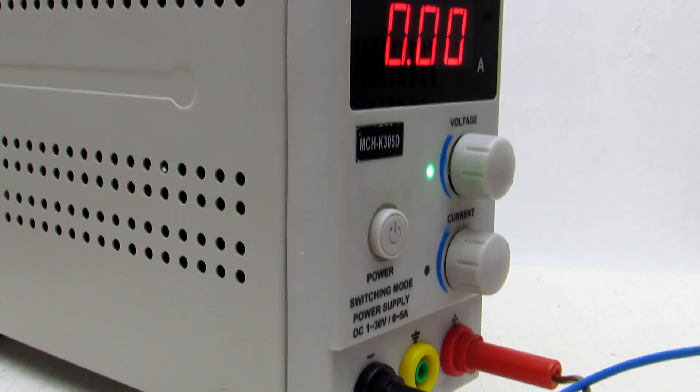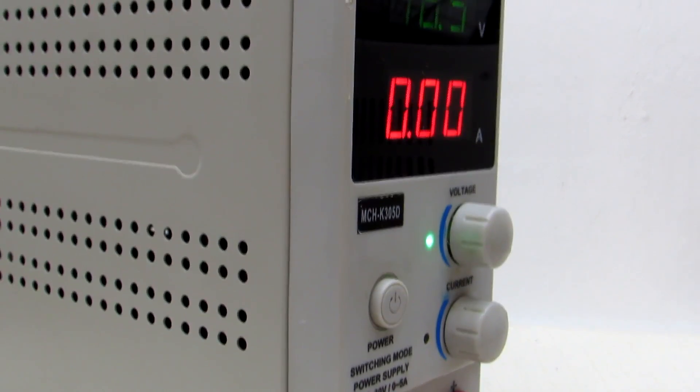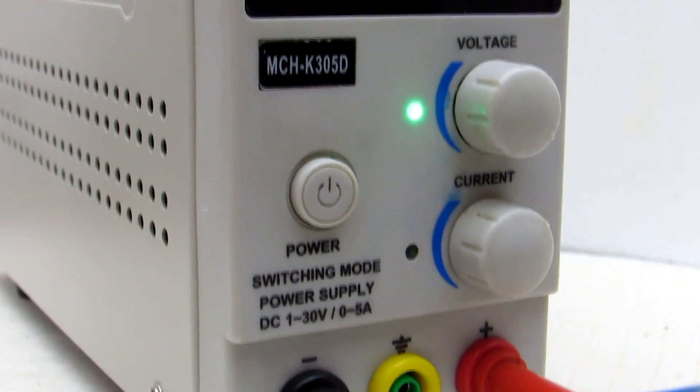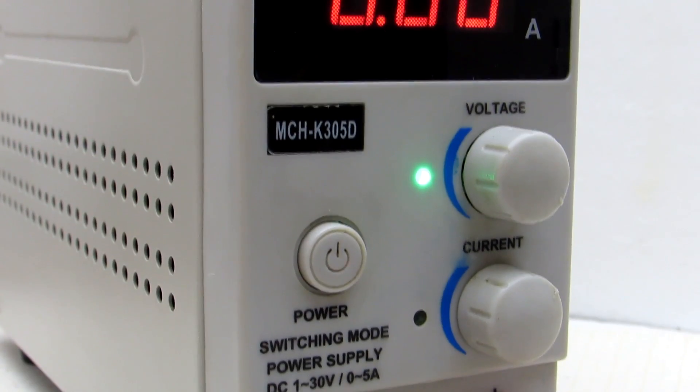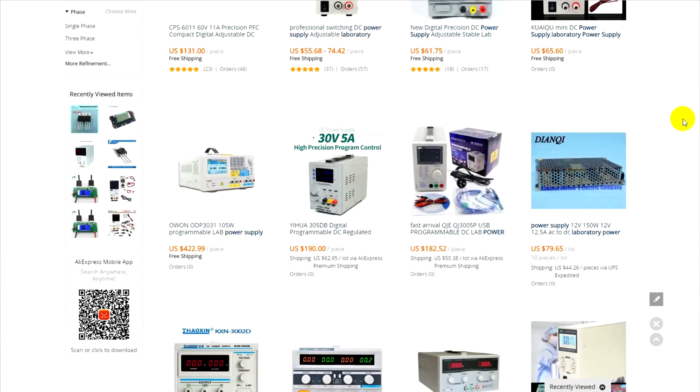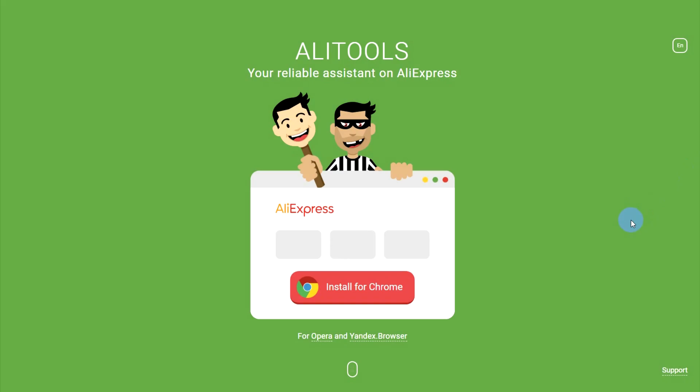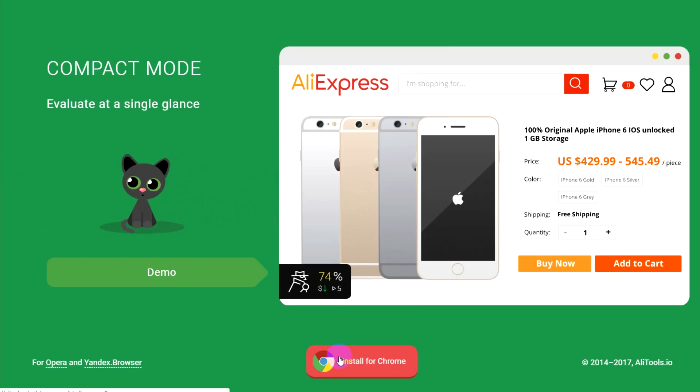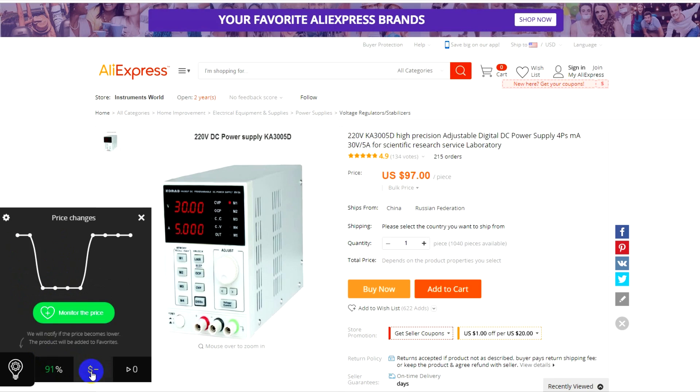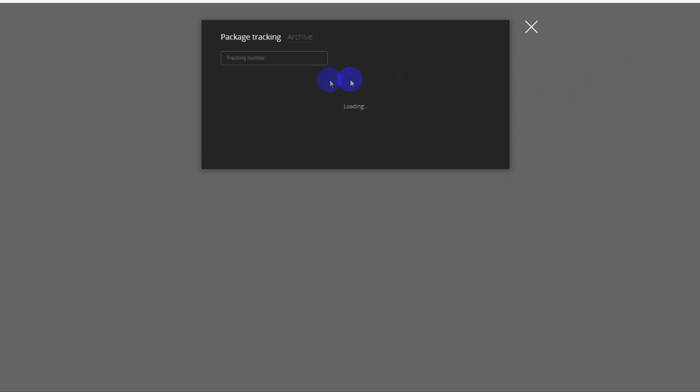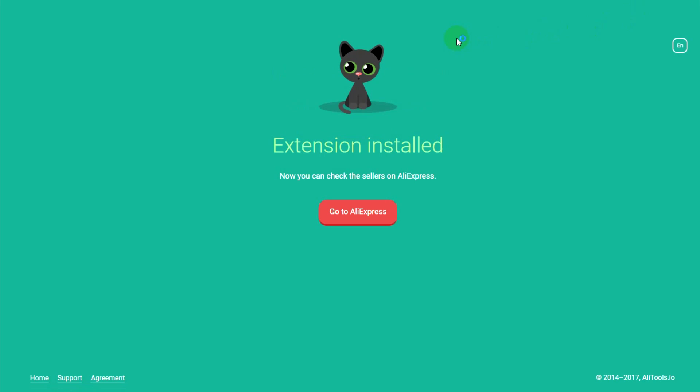Many people prefer factory-made laboratory power supplies. Given the huge choice that China gives us to buy in online stores, it will be easier to study the offer of the sellers and choose the most suitable product if you install the browser extension Allytools. It will help to study the dynamics of changes in prices, read comments from buyers, and track all your parcels. The link is in the description.